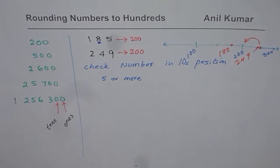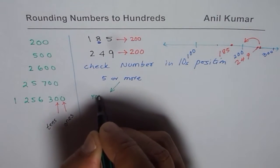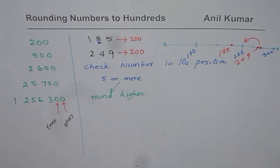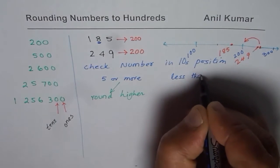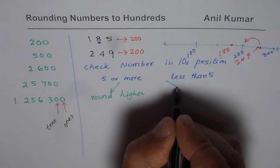then what happens? Then you round higher. But if the number is less than 5, in that case, you round lower.